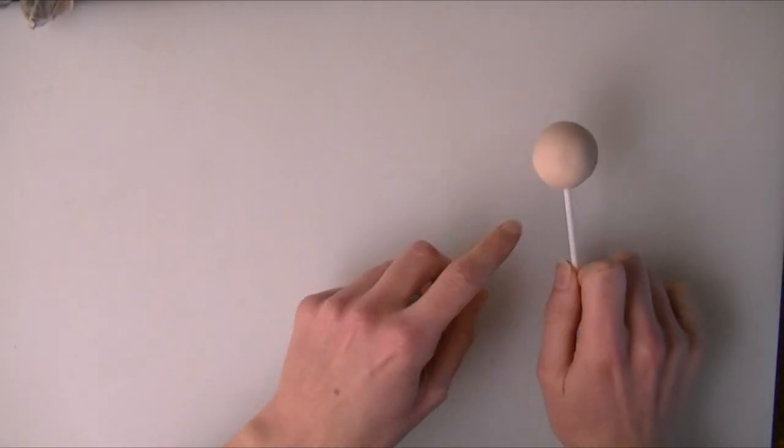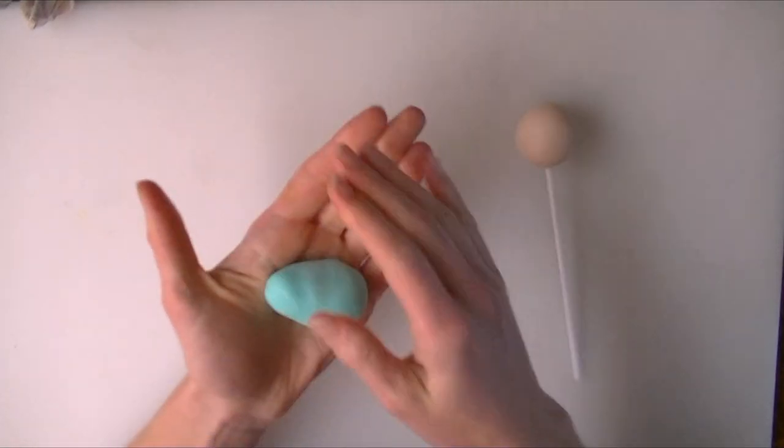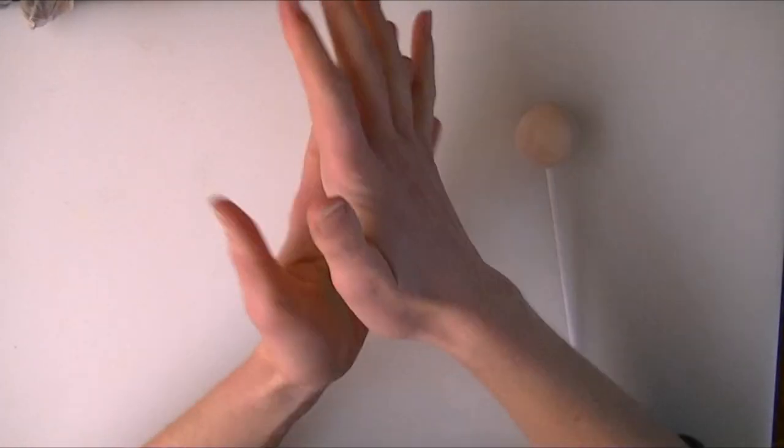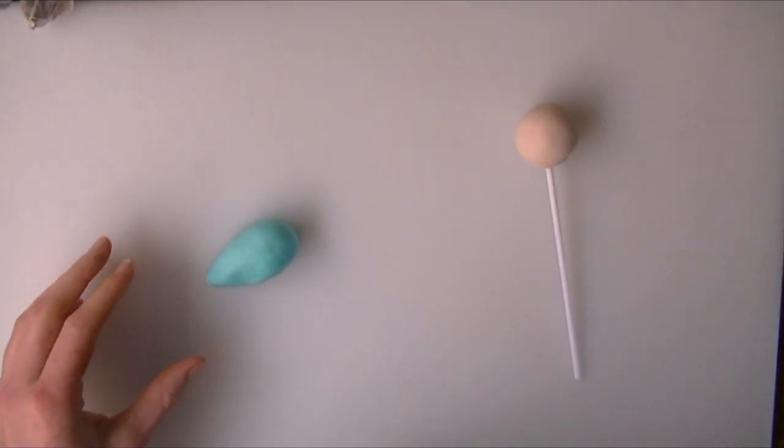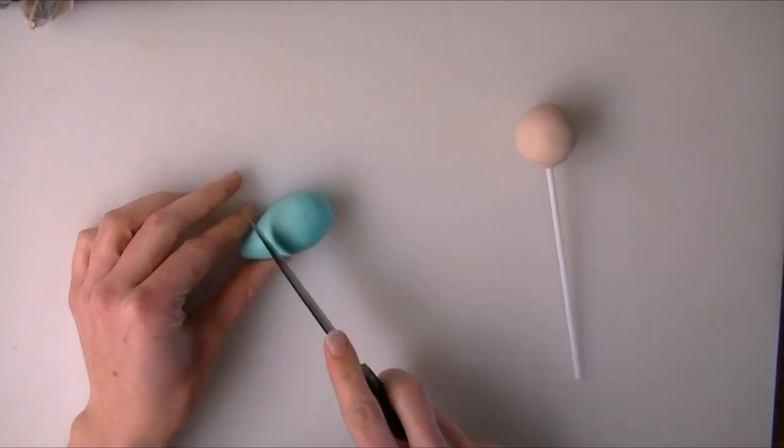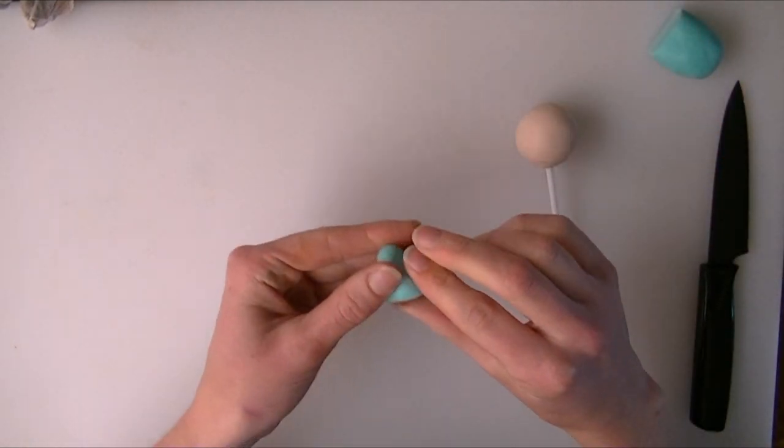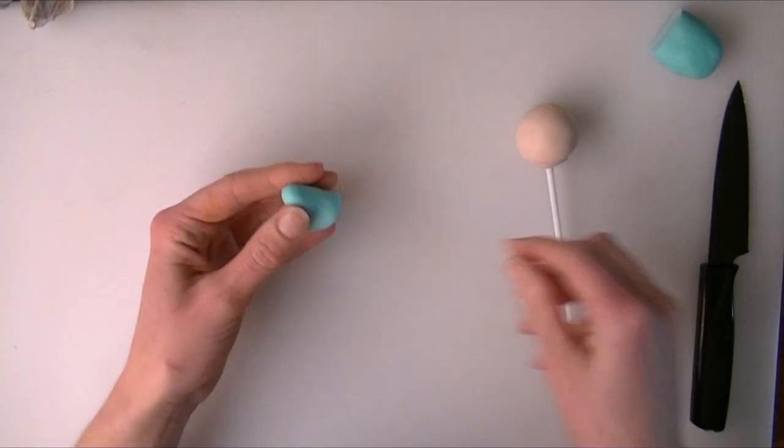So I've let my cake pop dry and I've taken some Renshaw fondant and dyed this the colour that I want. I'm going to start with it in a ball and then we're going to roll it into a little cone shape. Now it's way too big for the body. We want them to have a tiny little body otherwise it won't stay on the stick. So I'm just going to cut the top little part of that off and just pinch around the edge like so.